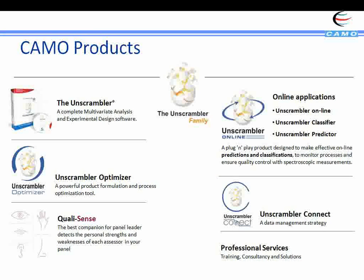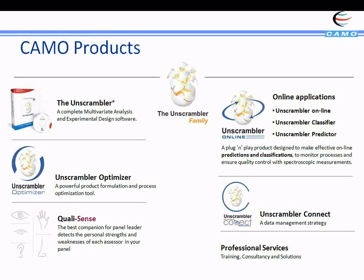We have three other software that we will not use today, but that are also part of the CAMO product. We have Unscrambler Optimizer, which is a software dedicated to process optimization and product optimization, and Online, which is dedicated to online monitoring. And we have Unscrambler Connect, which is a data management strategy.